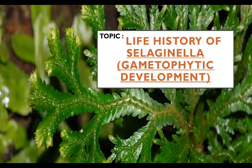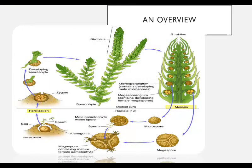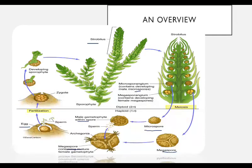We are going to study the life history of Selaginella, a well-known pteridophyte, focusing on the gametophytic development. Here we have an overview of the entire life cycle of Selaginella, which includes the strobilus through which we get microsporangia and megasporangia, producing microspores and megaspores. On germination these give male and female gametophytes, which produce sperm and eggs that fuse in fertilization, forming a zygote, then a developing sporophyte.